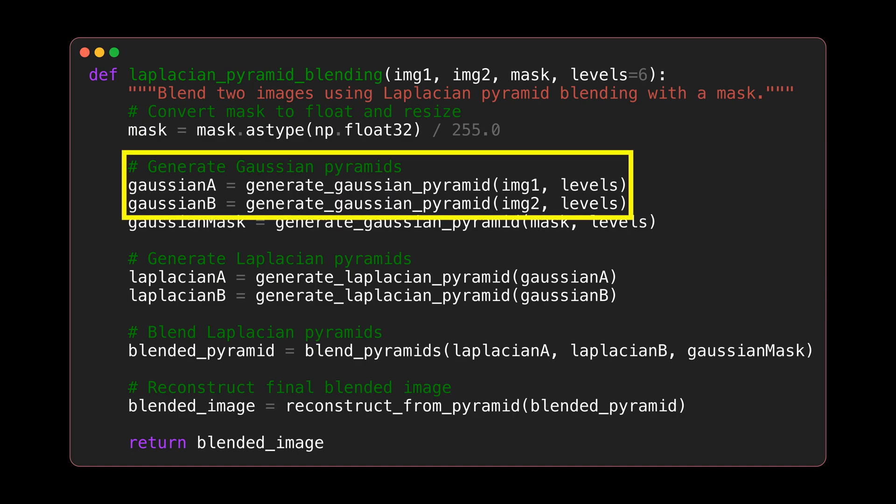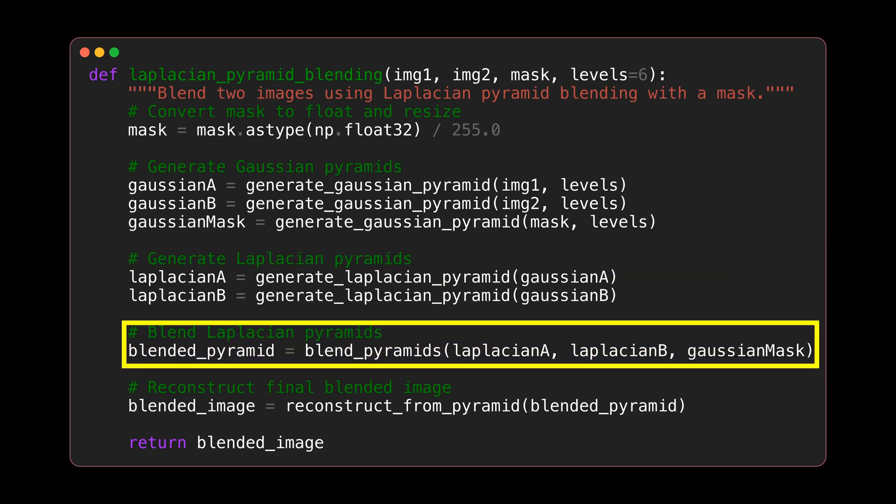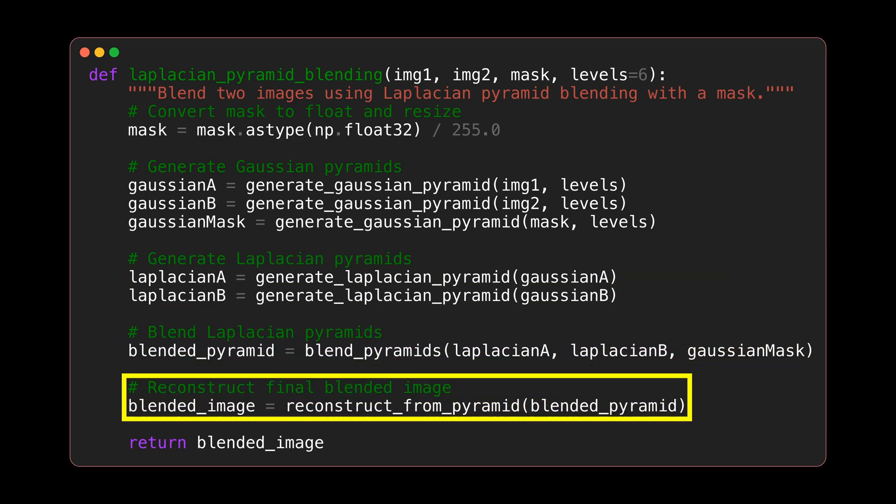We start with constructing the Gaussian pyramid for image 1 and image 2. Using the Gaussian pyramid, we can generate the Laplacian pyramid. We blend the two Laplacian pyramids and reconstruct it back to the high resolution image. Let's take a closer look at how each function is implemented.